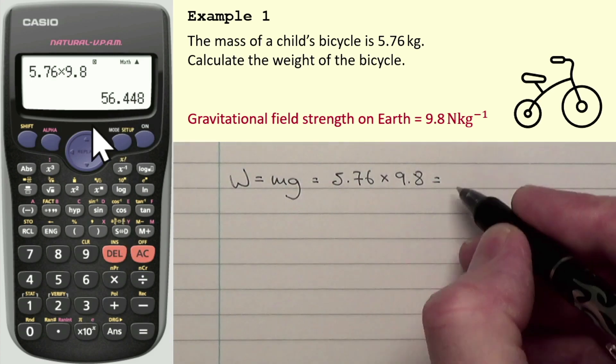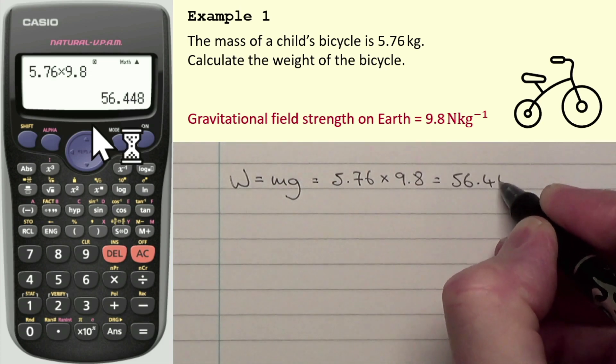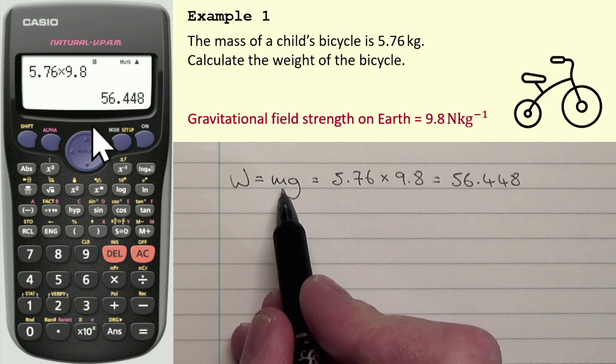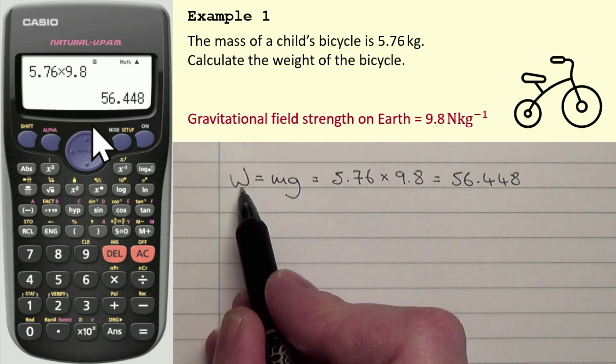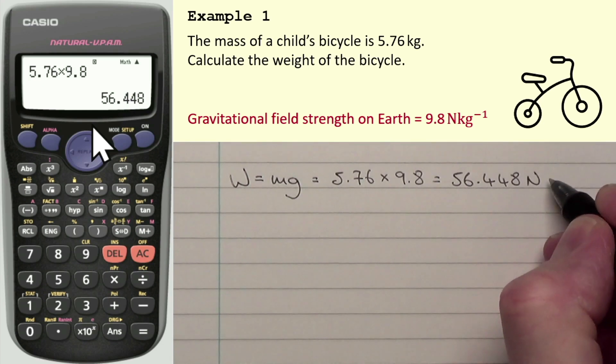So we've actually got 5 significant figures. I'm going to write them all down, actually. 56.448. And mass is in kilograms. G, that's in newtons per kilogram. Weight, well, that's a force. So it should be written in newtons.